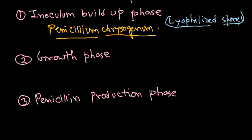Once mycelia start to form and vegetative growth is established, we allow them sufficient time for appropriate growth — that is why the second phase, the growth phase, exists. This is also called the pre-fermentation stage, where agitation and aeration are ongoing, because aeration is very much required during this process.